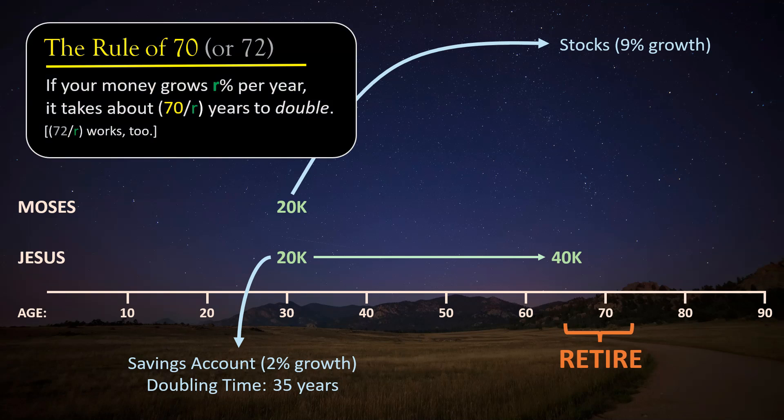According to the Rule of Seventy, but here, using 72, which will be more convenient, the doubling time for Moses' investment will be 72 over 9, so 8 years. That means that when Moses is 38 years old, his $20,000 will have doubled to $40,000. Eight years later, when Moses is 46 years old, his $40,000 will have doubled to $80,000. Eight years after that, when he's 54, it will have doubled again to $160,000. Another eight years, another doubling. He's now 62, and his initial investment is now worth $320,000, and he may still have one more doubling period left before he retires.